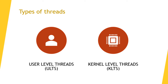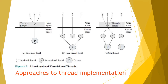There are two types of threads: user level threads or ULTs, and kernel level threads or KLTs. There are three ways threads are implemented: using user level threads, kernel level threads, or a combined approach which implements both.